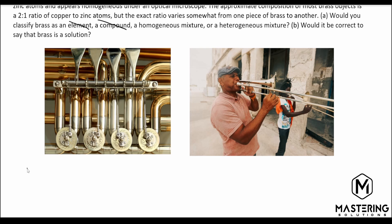But which kind of mixture is it — homogeneous or heterogeneous? Homo meaning same, hetero meaning different, and genos is the Greek word for kind. So the question is: do we have the same kind of things in this mixture, or different kinds? In the question, they say that under an optical microscope it looks all the same.